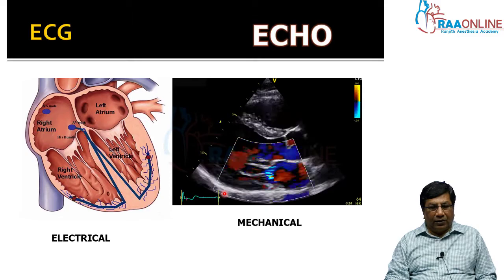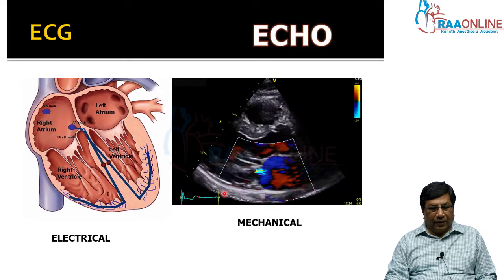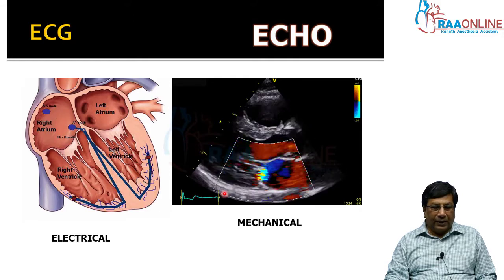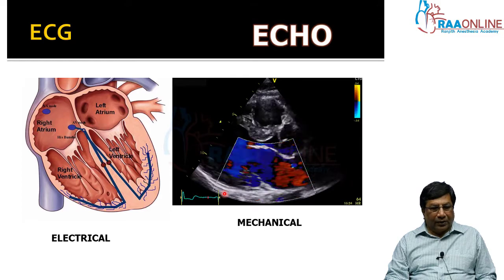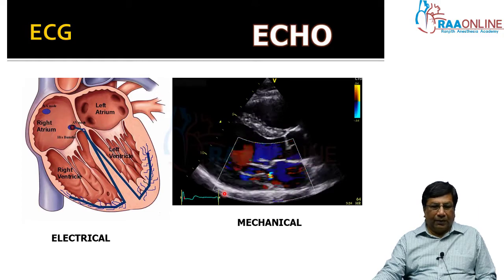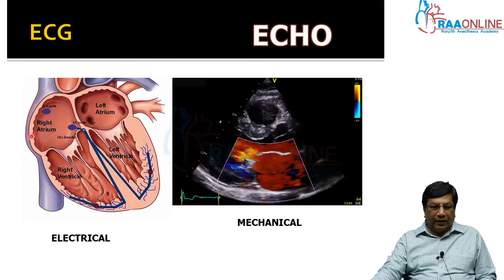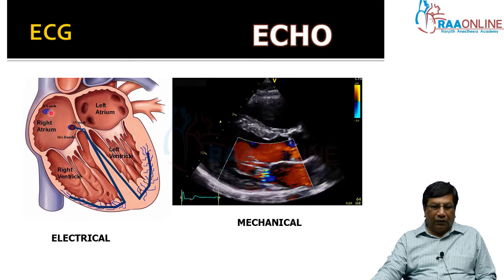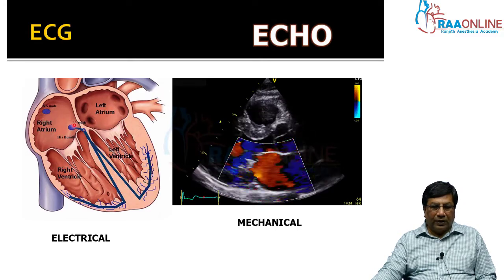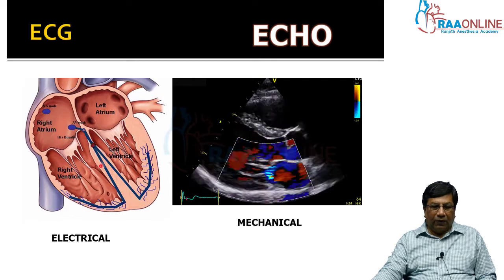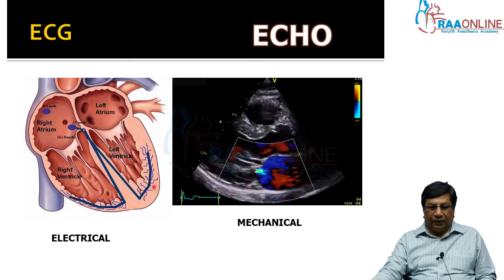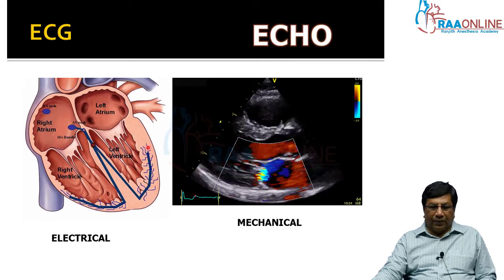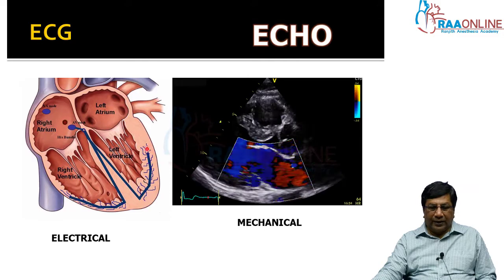First, let us know the difference between electrocardiogram and echocardiogram. The heart as a pump has two properties: electrical and mechanical. The electrocardiogram gives you the electrical properties of the heart — where the electrical current is produced, what frequency it is produced at, what speed and pathway it travels, whether it is reaching the appropriate place at the right time, and whether that place is responding to the electricity correctly.